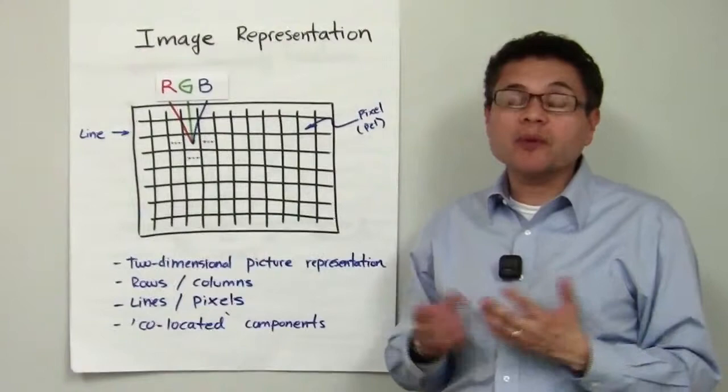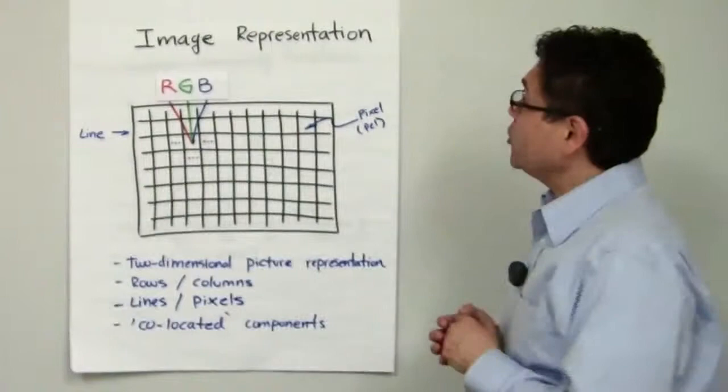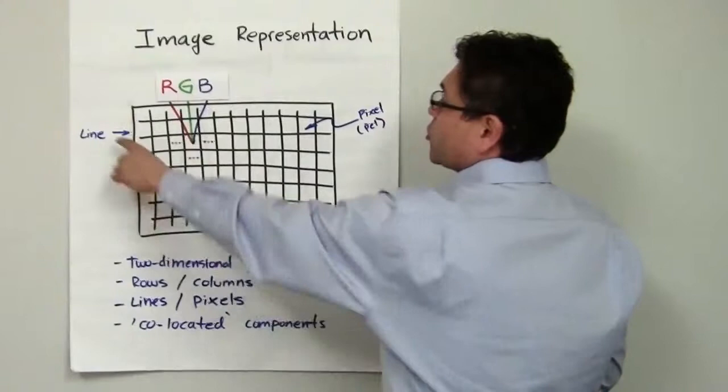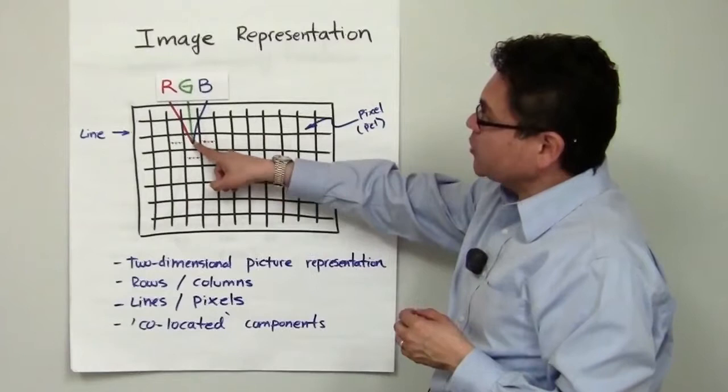First, let's talk about common ways of representing images. One common way of representing images is as a two-dimensional array of pixels. In this graph, you could see that you have sets of rows of pixels and columns. You could also call them lines and pixels individually as well.